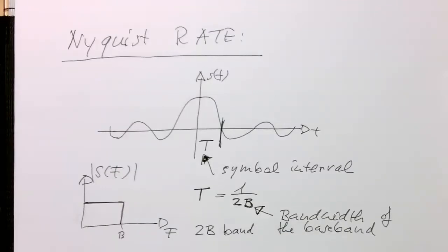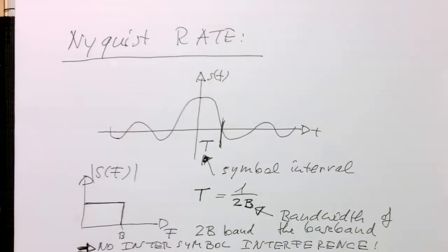Then we are getting no inter-symbol interference. That's quite a nice result and a very simple one. This is called the Nyquist rate.